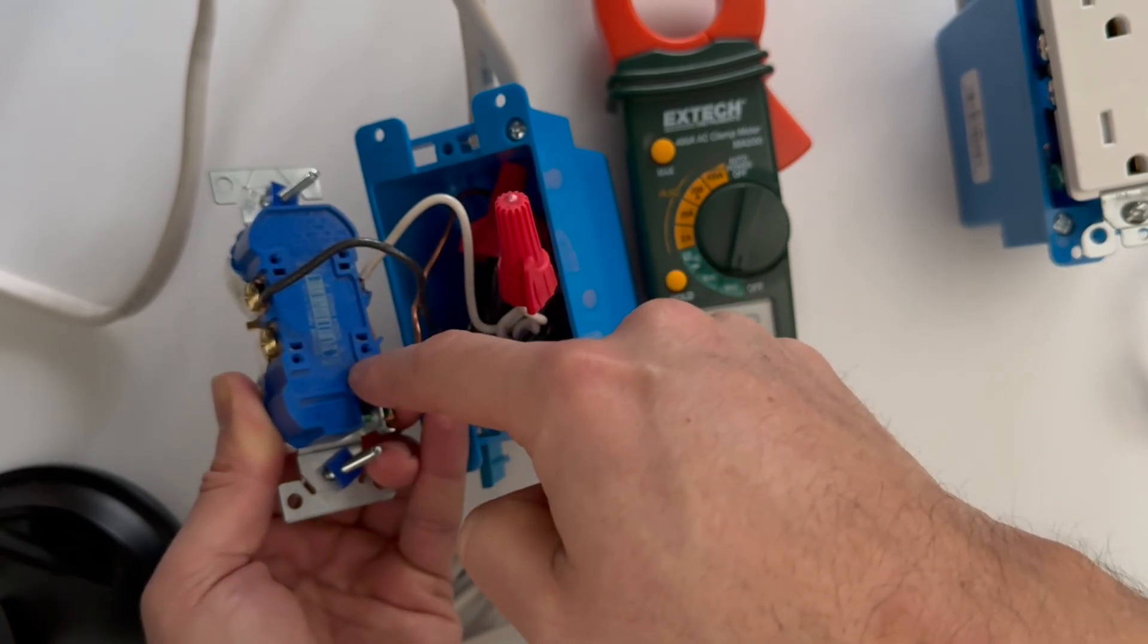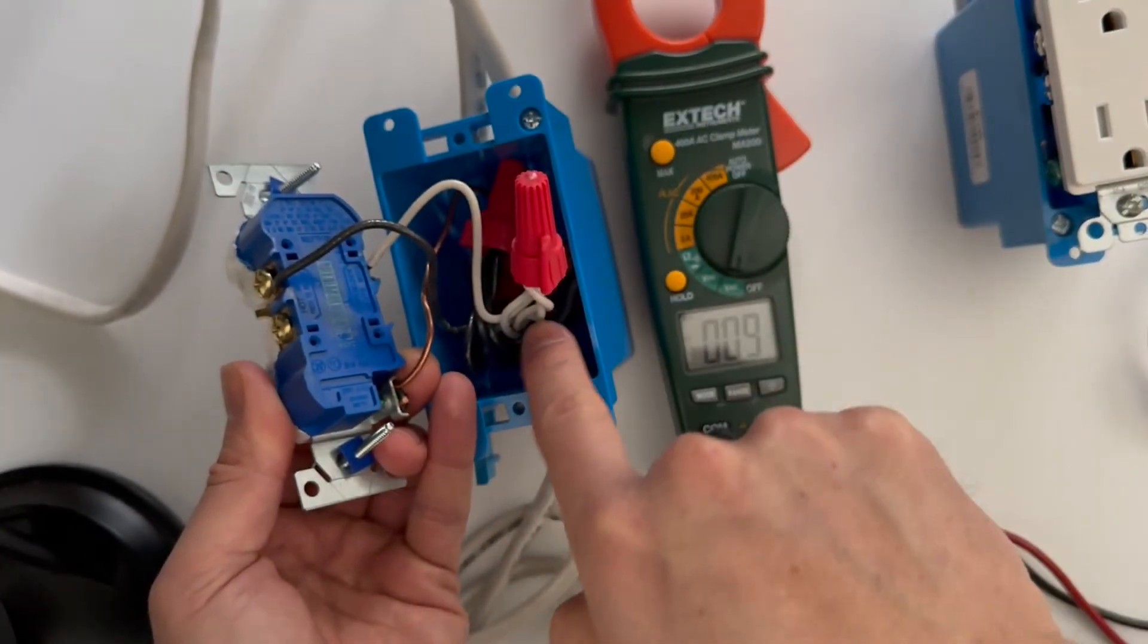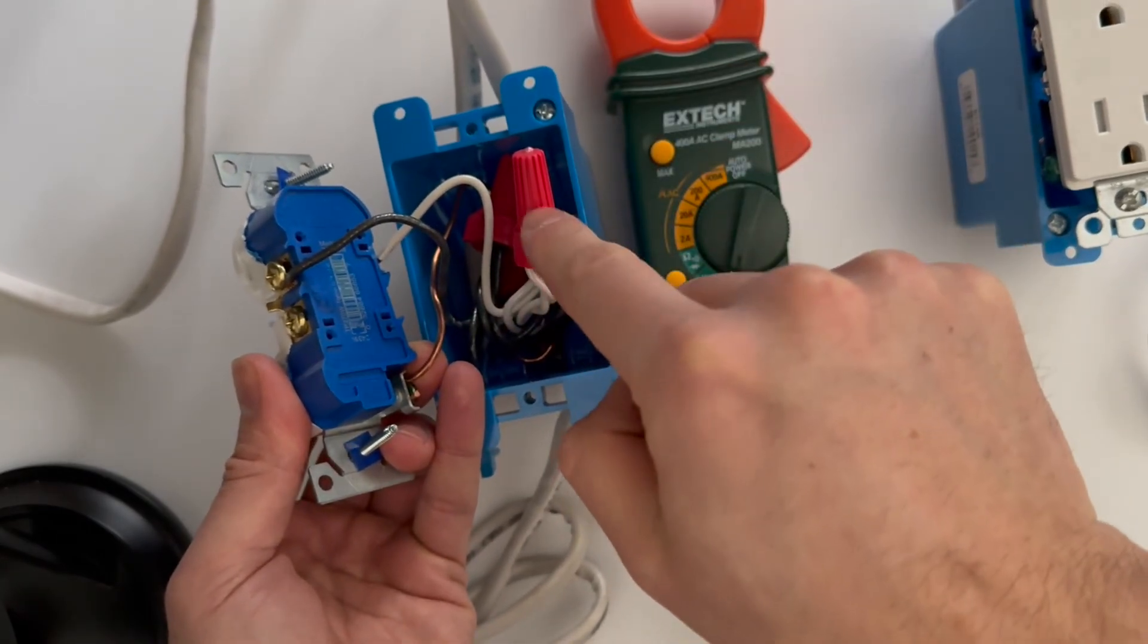It fails either inside of the outlet when you backstab it, and you will usually notice it will become dark or burnt out, or it will fail in the pigtailing connection.